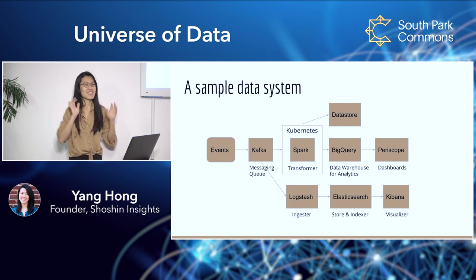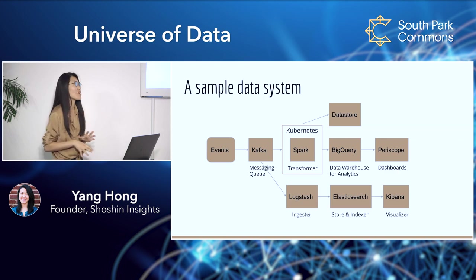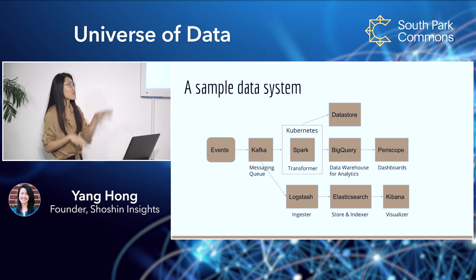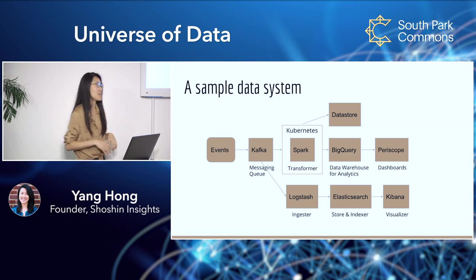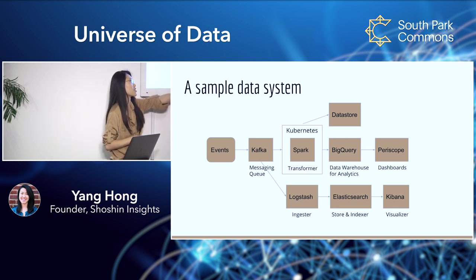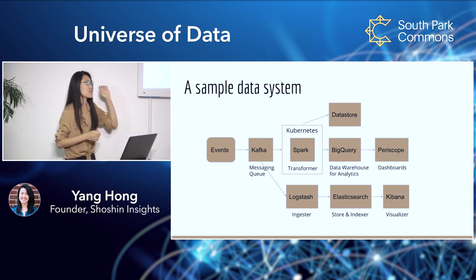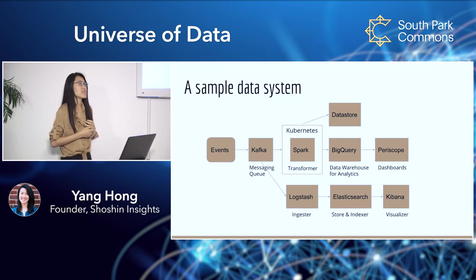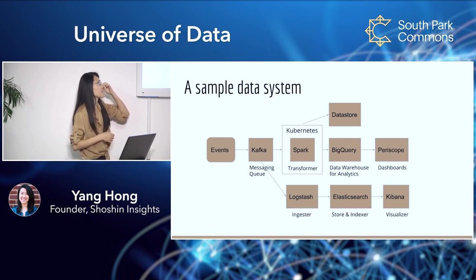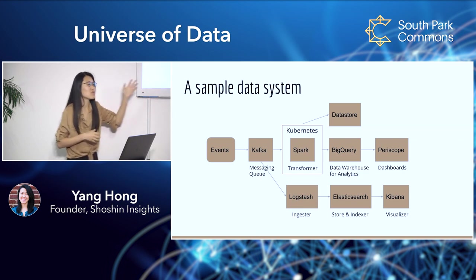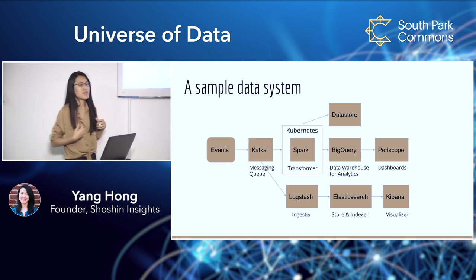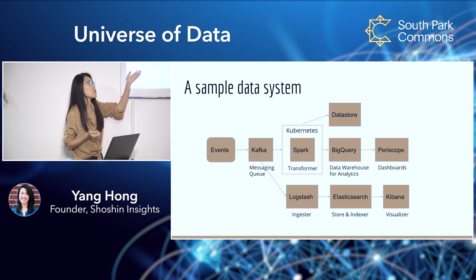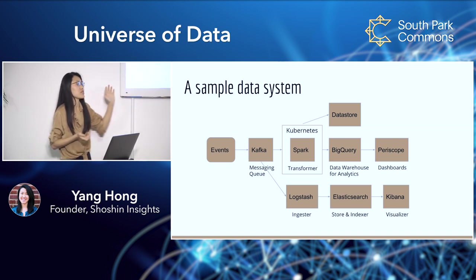I'm going to show a sample data system to give you a more concrete sense of what this could look like. The Elastic Stack I mentioned earlier is essentially Logstash, Elasticsearch, and Kibana. Let's say you have an event stream coming in — whether that's people clicking through websites, YouTube views, or someone using your mobile app. The first thing you want to do is capture that: an ingest system with a messaging queue. One industry standard people use is Kafka.